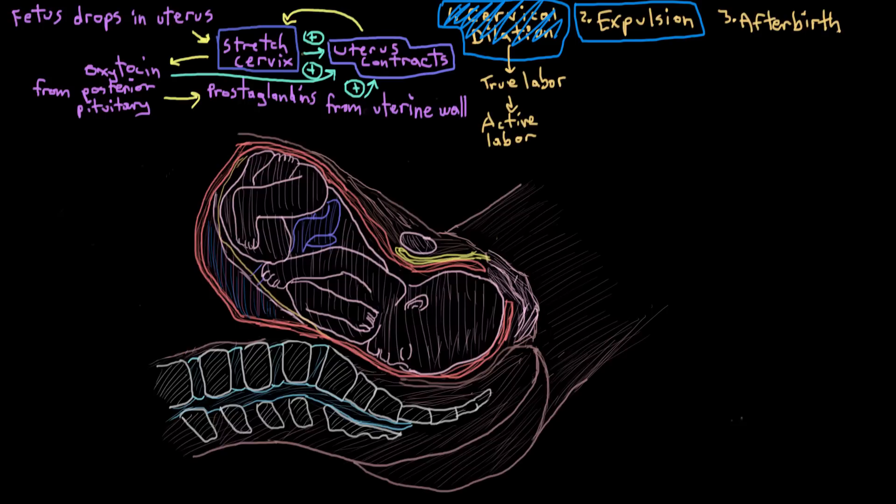Now, you might be thinking, the birth canal might be a little small for the baby's head. Aren't we worried about that? Well, it turns out that the skull bones of the newborn haven't really fused together yet. So they sort of slide over top of each other a bit and sort of compress the skull enough so that the baby can make it through the birth canal.